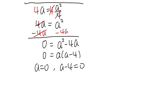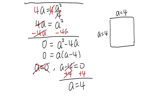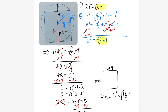a = 0 is not possible since we actually have a square in this geometry problem. So the only valid solution is a − 4 = 0, giving a = 4. Each side of the square is 4, so the area is 4 × 4 = 4² = 16. That's it!